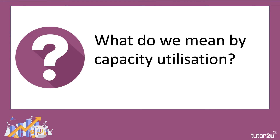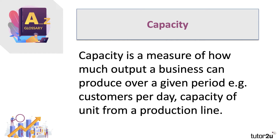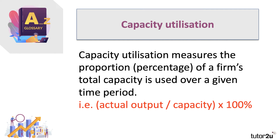So what do we mean by capacity utilization? Well, the word capacity is a measure of operational capacity or capability for a business. It's a dynamic concept — it changes over time as a result of investment. Basically, capacity measures how much output a business can supply over a given period. You might have a number of customers per day in a restaurant, for example, or the capacity of units from a production line in a manufacturing plant. Capacity utilization is closely linked to the concept of productive efficiency, and it measures the percentage or proportion of a firm's total capacity